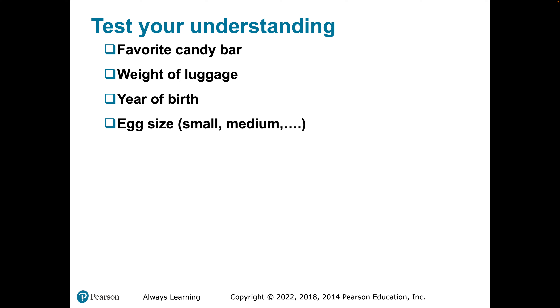Test your understanding: favorite candy bar, weight of luggage, year of birth, egg size — what scale are each of these? Favorite candy bar has no natural ordering, so it's nominal. Weight of luggage: a value of zero means zero weight, so it's ratio. Year of birth has a natural ordering, so it's ordinal. Egg size — small, medium, large, extra large — is categorical with a natural ordering, so it's also ordinal.